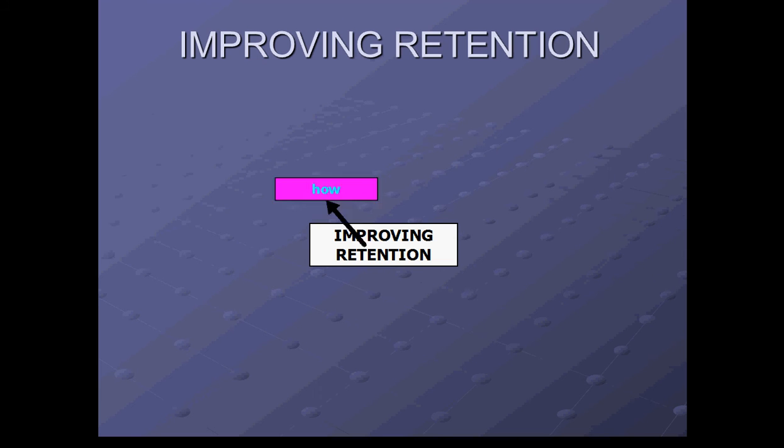There are ways in which we can improve memory. For example, knowing how, so educating the performer about the details of the skill, explaining what to do, explaining how to do it, giving a much deeper understanding of it helps us remember it, helps us retain that information.